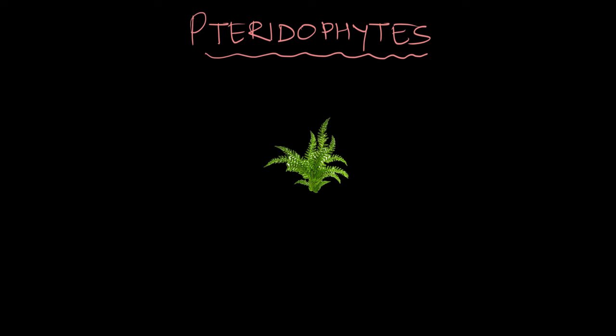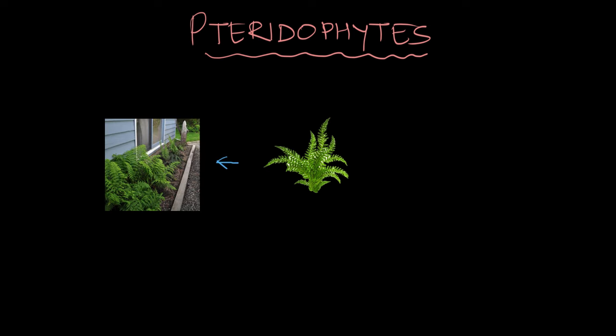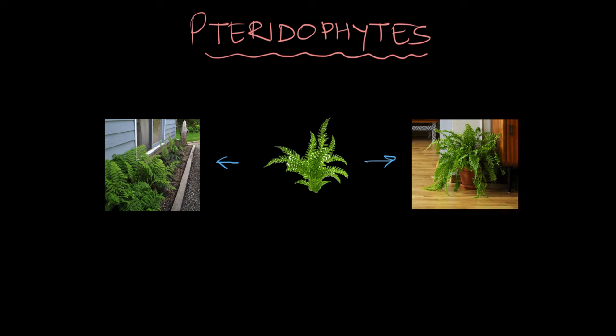You don't have to go too far to spot a pteridophyte. Chances are there's one right outside in your garden or even inside your house, sitting there looking pretty. It's just that you might not have known that it's a pteridophyte. So we're gonna fix that. In this video, we're gonna talk about pteridophytes and their entire life cycle. We'll explore their habitats, their structure, and even how they reproduce.